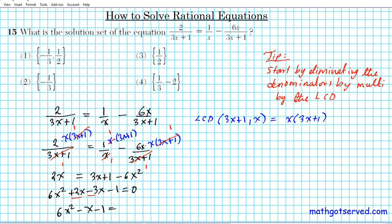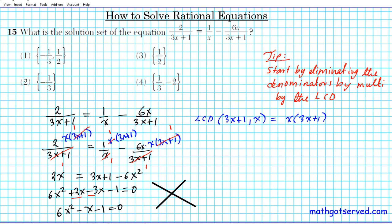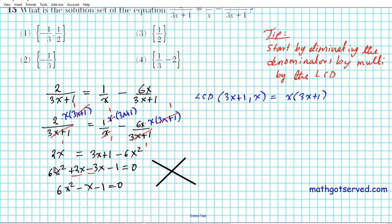These two terms are like terms, so we are going to combine them and we have 6x squared minus x minus 1 equals 0. We're going to solve this by grouping. Let's play the x game here. So ABC: A is 6, B is negative 1, and C is negative 1. AC goes on top, AC is negative 6, and B is negative 1. What two numbers multiply to give you negative 6 and add to give you negative 1? Negative 3 and 2.